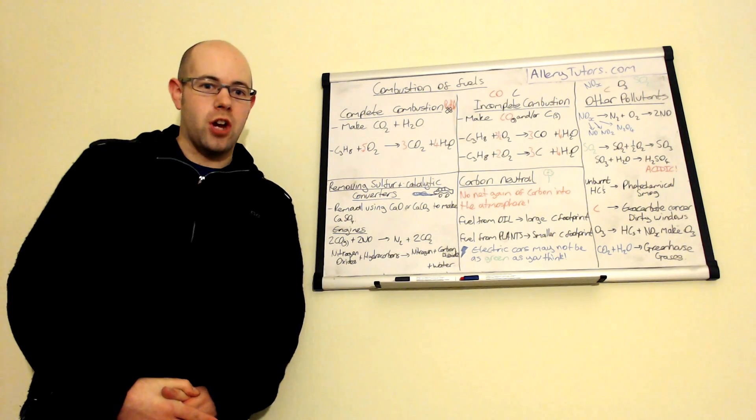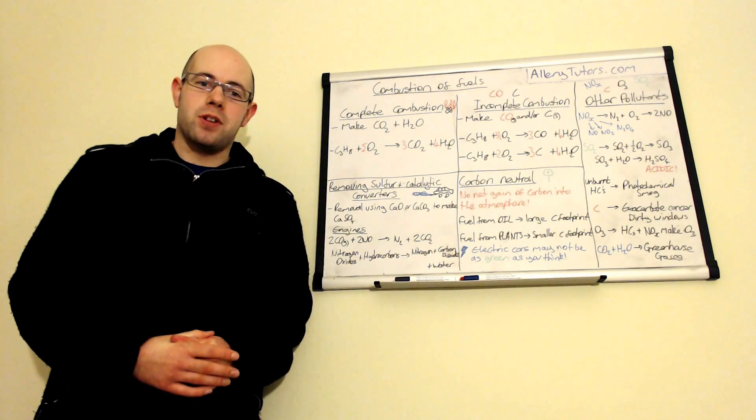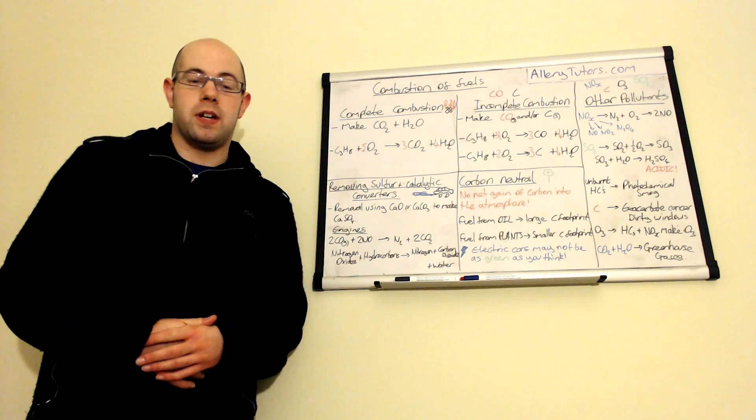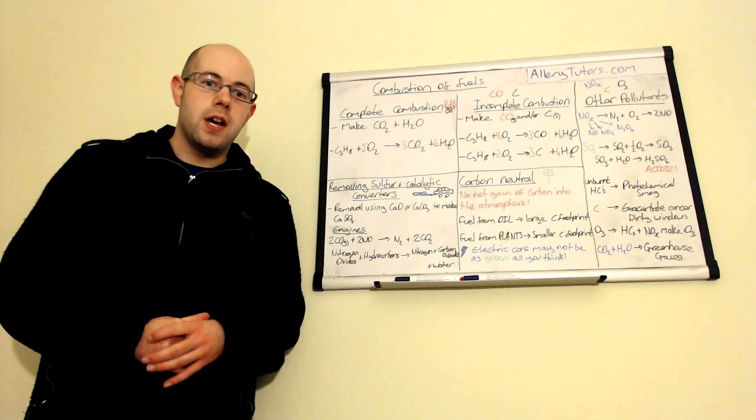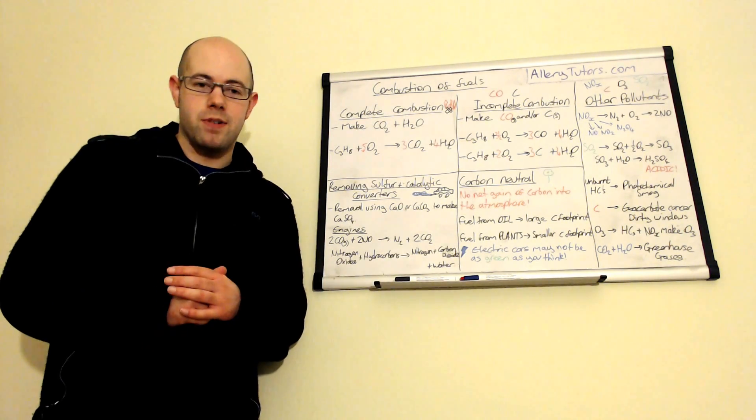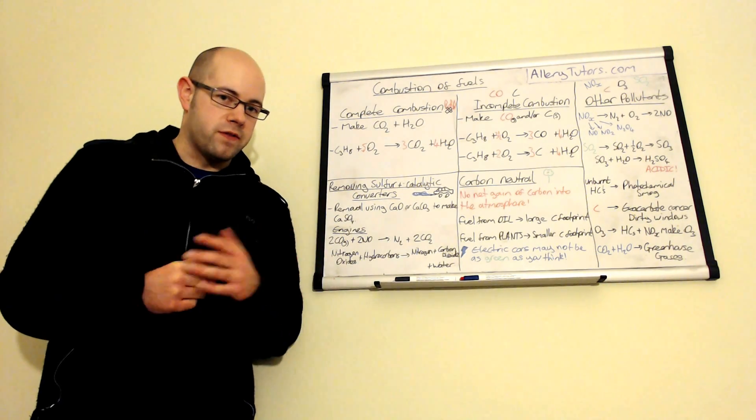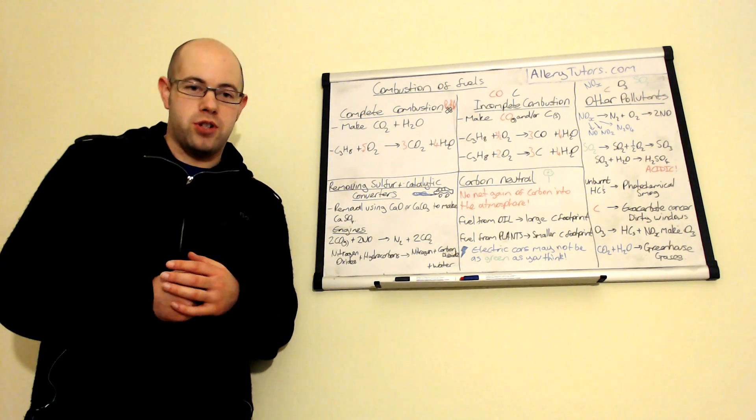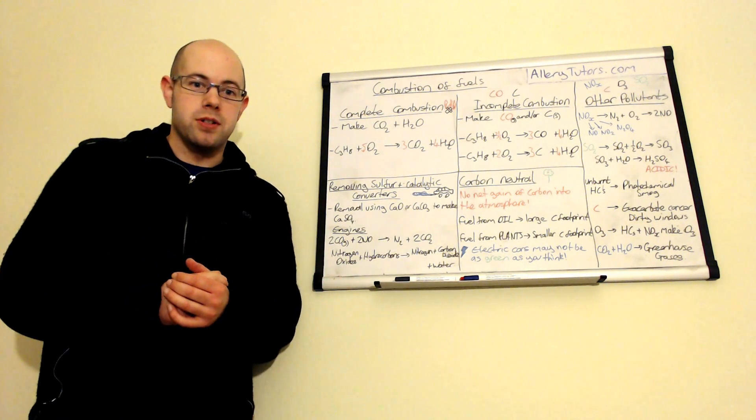Now, fuels are mainly short-chain hydrocarbons and they're normally found from crude oil. So, the vast majority of fuels that we use. Obviously, we know that crude oil is a finite resource and it's rapidly running out. But when we burn a fuel, it can actually produce some bad pollutants as well.